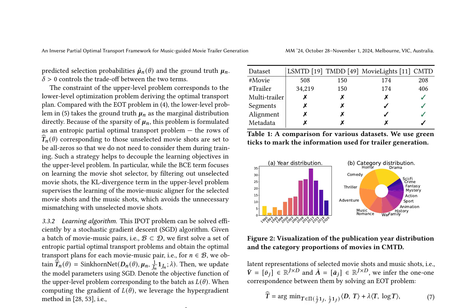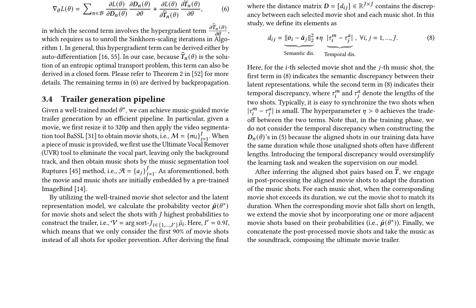This research paper proposes an inverse partial optimal transport, iPod, framework for music-guided movie trailer generation. The framework consists of an upper-level problem that learns a movie shot selector and a lower-level problem that derives the optimal transport plan. The lower-level problem is formulated as an entropic partial optimal transport problem, which avoids unnecessary mismatching with unselected movie shots. The iPod problem is efficiently solved using a stochastic gradient descent algorithm. The paper also presents a comprehensive movie trailer dataset, CMTD, which contains 208 movies and 406 trailers with detailed annotations.